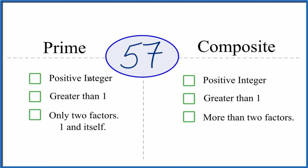So is it a positive integer? Yeah, it's positive, it's a whole number. 57, it's greater than 1.